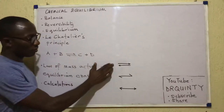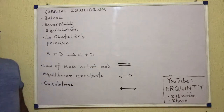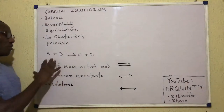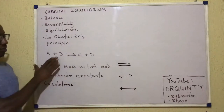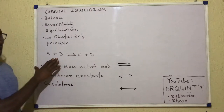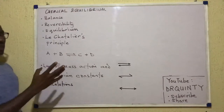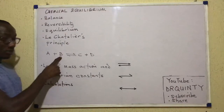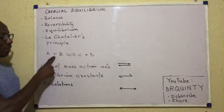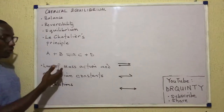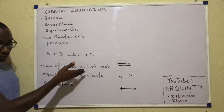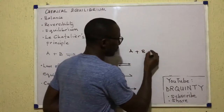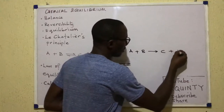So, any of these symbols can be used to represent reversibility. Now, what does it mean to say a reaction is reversible? This reaction is reversible in the sense that if I take a reaction vessel and I put A and B into it, A and B would react, of course, to form C and D. But unlike in this case — A plus B to form C plus D.